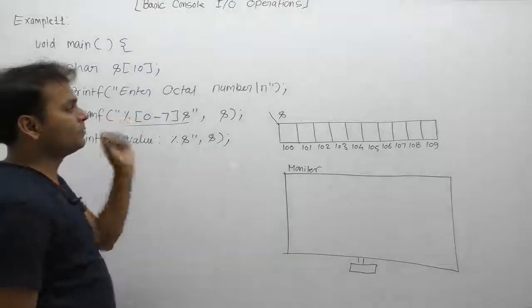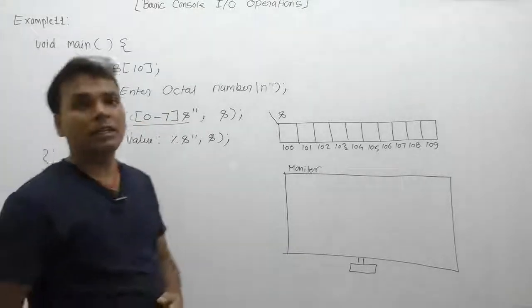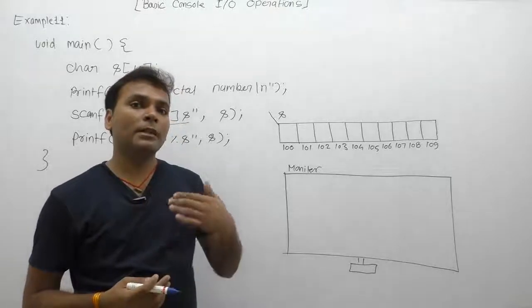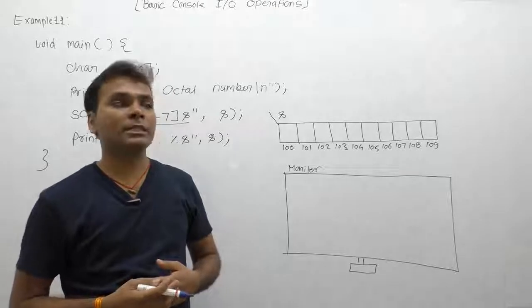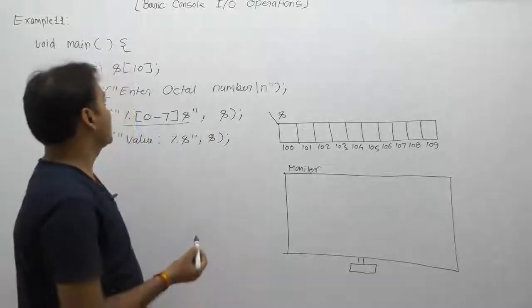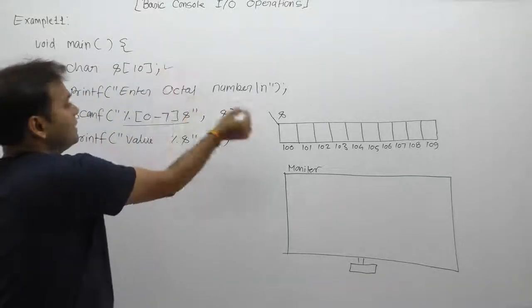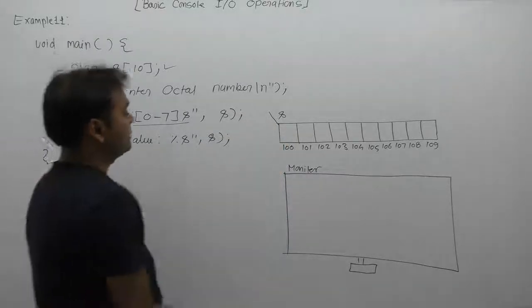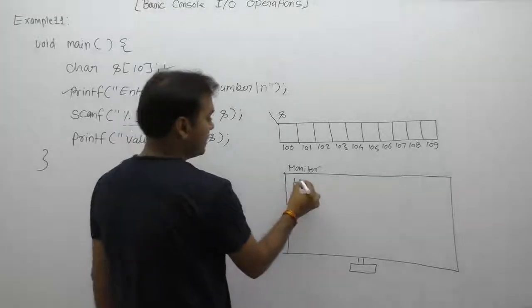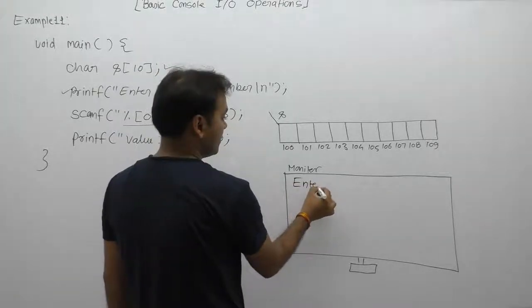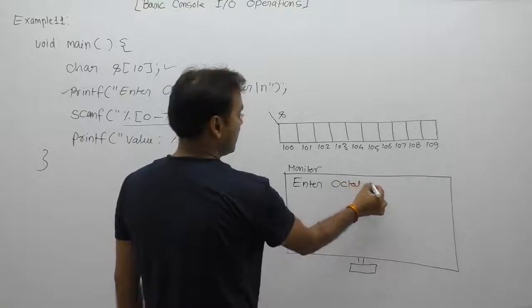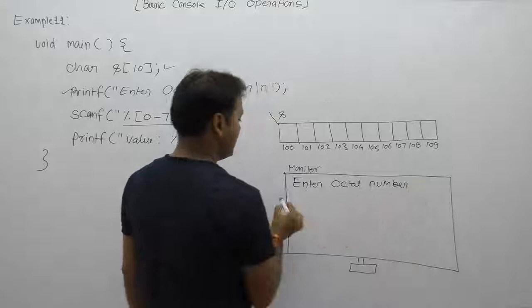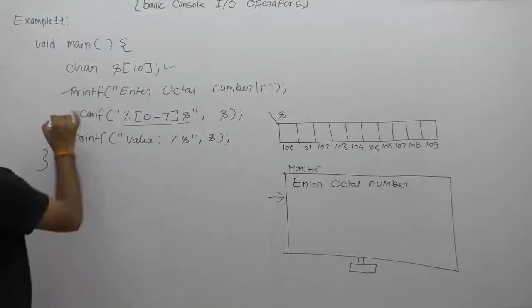Scanf function will read input data till the valid symbols are available inside the buffer. In that case, first of all we are declaring some array as s. Then according to printf message, enter octal number. After that, the selection cursor will go to the next line.